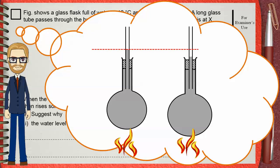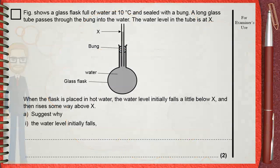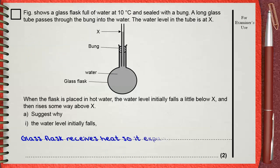So, we can say that. Why the water level initially falls? Because glass flask receives heat, so it expands and its volume increases. One mark for seeing that the glass flask will receive heat and the other mark is for that it expands.